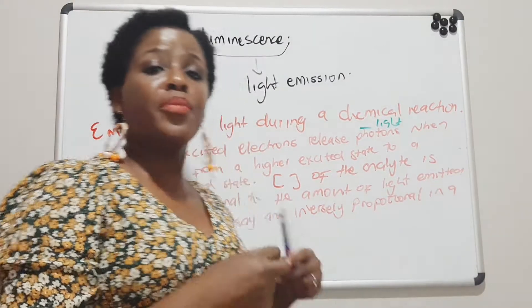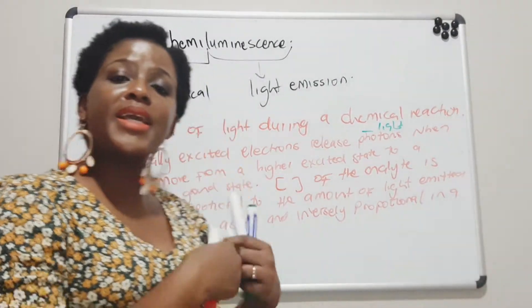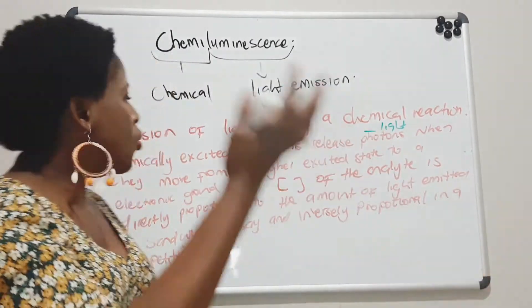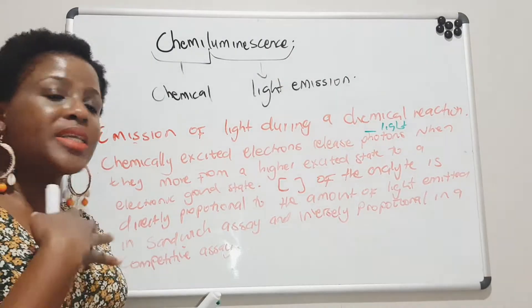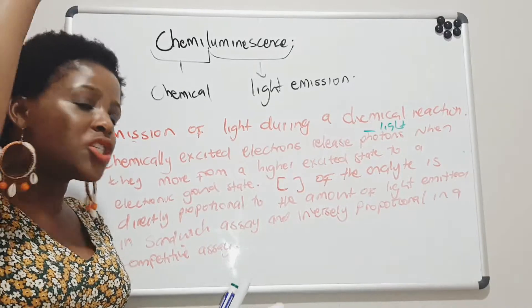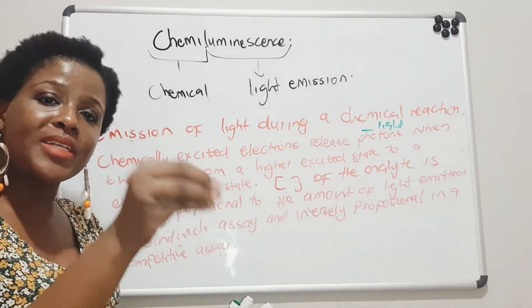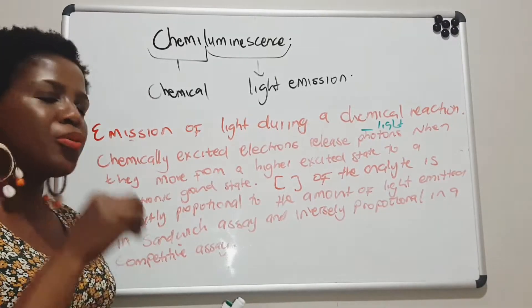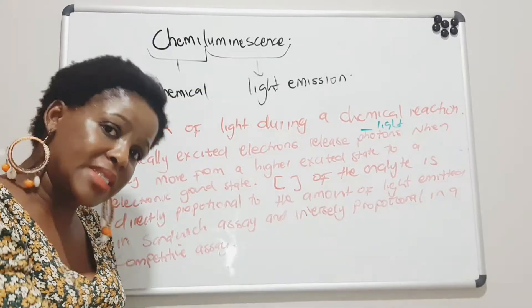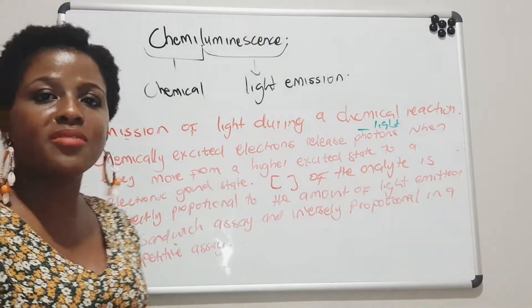To recap — in chemiluminescence there is the emission of light during the course of a chemical reaction, whereby chemically excited electrons release photons when they move from their higher energy state into their electronic ground state. The concentration of the analyte is directly proportional to the light emitted in a sandwich assay, and inversely proportional in a competitive assay.